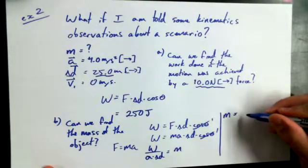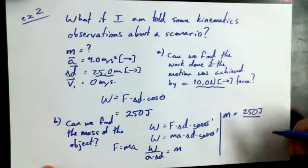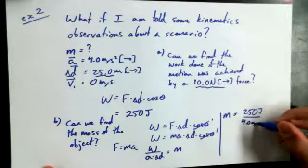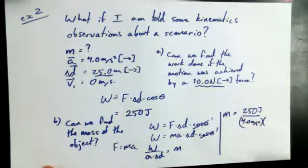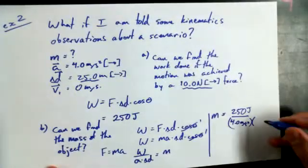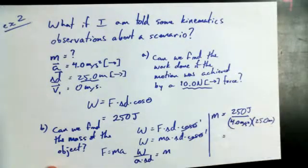So the mass of this object is equal to the amount of work, 250 joules, divided by the acceleration, 4.0 meters per second squared, times displacement of 25 meters.